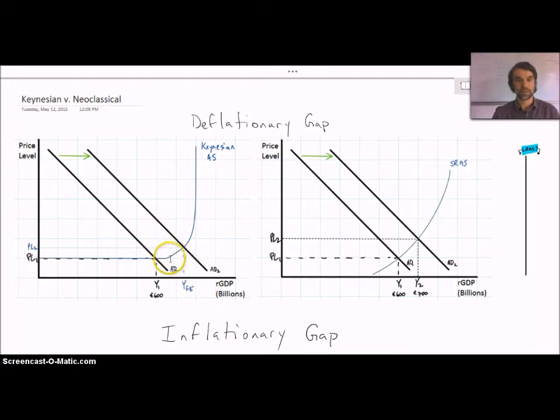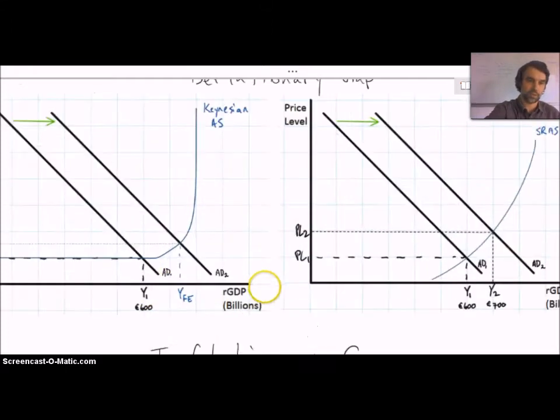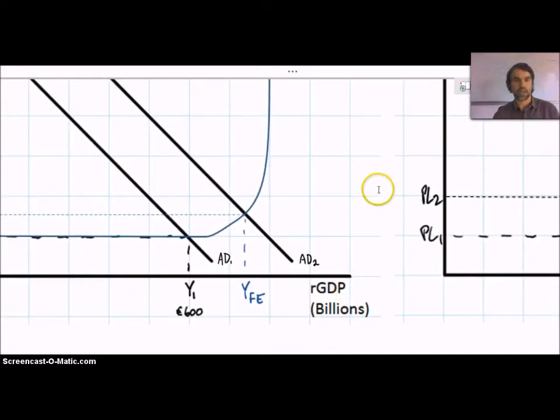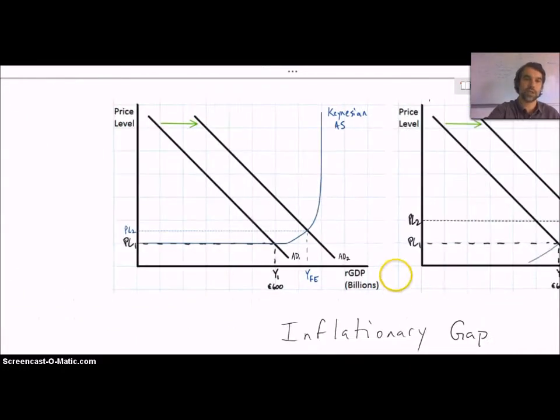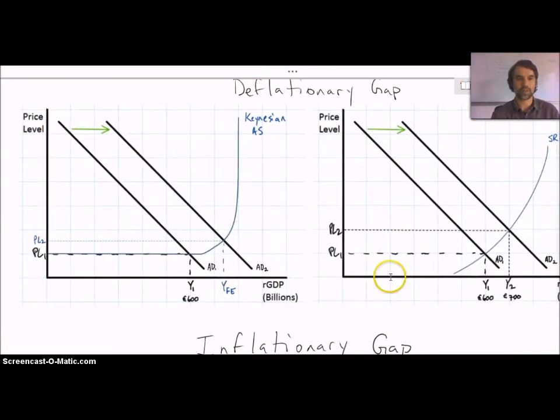So in the Keynesian view, a change to aggregate demand is going to lead to a change to national income of $600 billion all the way over, this would be $700, maybe $740 billion. So it's going to have a very large effect on national income, but the effect on price level, you can see it's less than one square.